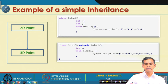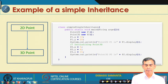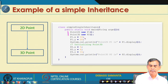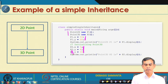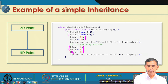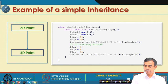In the main method, objects of Point2D and Point3D are created and initialized. For object P2 being a point of class Point3D, x and y are accessible. By virtue of inheritance, all members and methods are accessible through the object of the subclass. This is an example of the simple inheritance we have discussed.